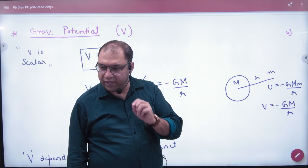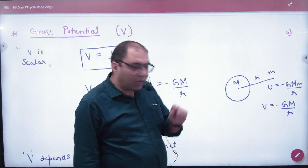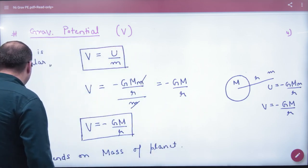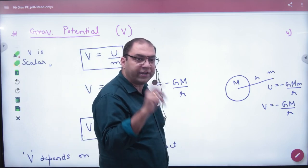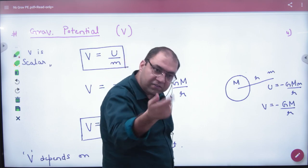Minus G Mm by small r. Energy. If I say that I have potential here, see, potential system doesn't exist. Why is energy system? System means that both masses are involved.